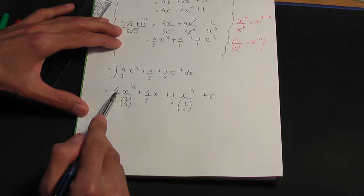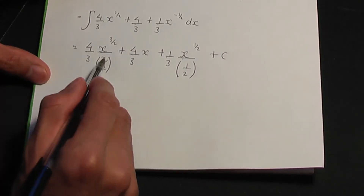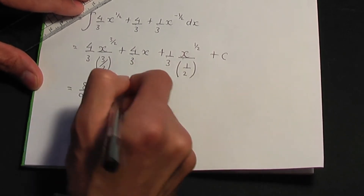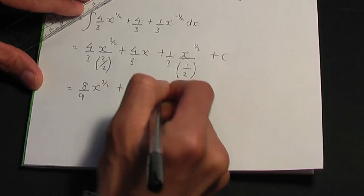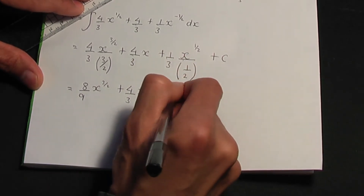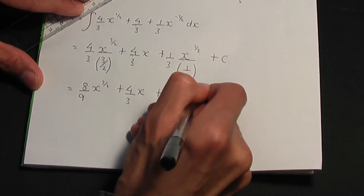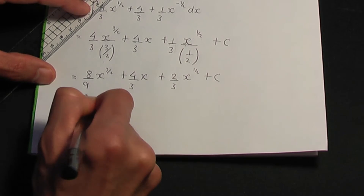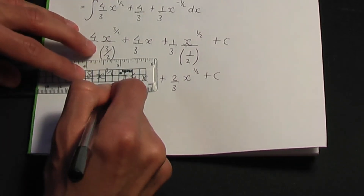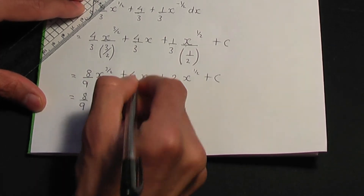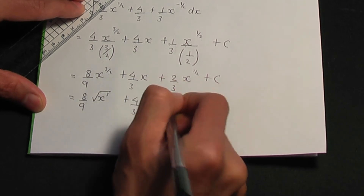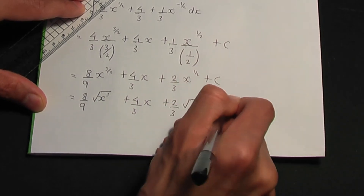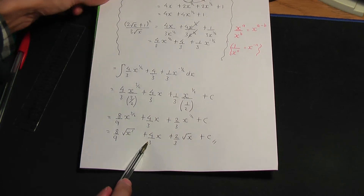Tidying up: 4 over 3 divided by 3 over 2 is 8 over 9, so we have 8 over 9 x to the power 3 over 2, plus 4 over 3 x, plus 1 over 3 divided by half is 2 over 3 x to the power half, plus c. Rewriting: x to the 3 over 2 is the square root of x cubed, and x to the half is root x. So the final solution to part c is 8 over 9 times the square root of x cubed plus 4 over 3 x plus 2 over 3 root x plus c.